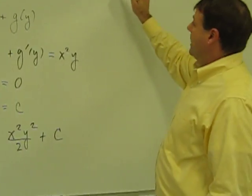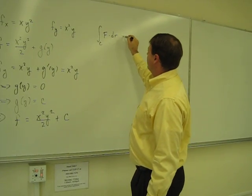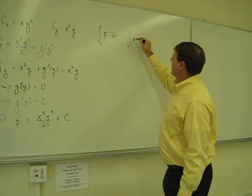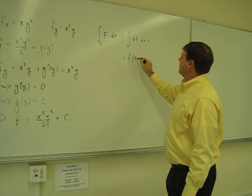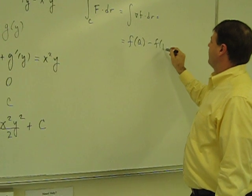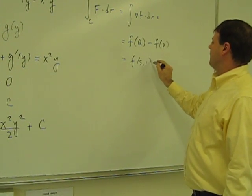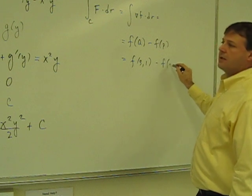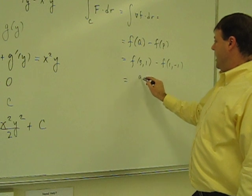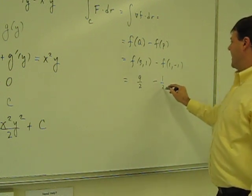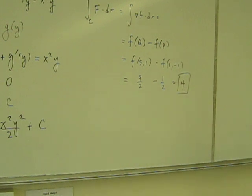Now my task is to compute this integral, and that amounts to just plugging those points in. The integral of F dot dR equals the gradient of F dot dR, which equals F of Q minus F of P. F of Q at (3, 1) and F of P at (1, −1). This gives us 9 halves minus 1 half, which equals 4.